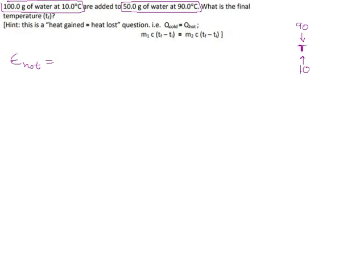The mass of the hot water is 50 grams. The specific heat for water is 4.19 joules per gram degrees Celsius, and the temperature change is, well, it's starting at 90 and it's dropping down to T.